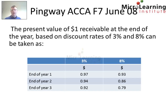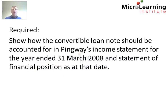You can see we're given at 3% and 8% a discount factor for $1 receivable at the end of year 1, year 2, and year 3. The requirement is that we must show how the convertible loan note should be accounted for in PingWay's income statement for the year ended the 31st of March 2008 and the statement of financial position as at that date.